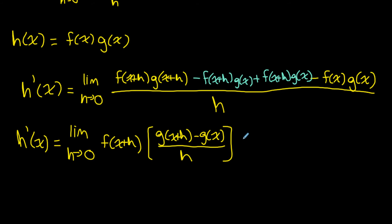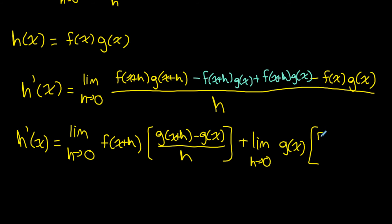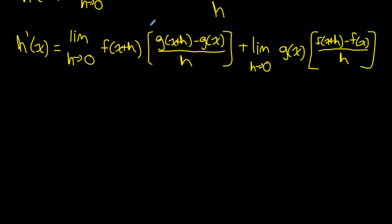Factoring g(x) from the last two terms, I write plus the limit as h goes to zero of g(x) times [f(x+h) minus f(x)] over h. The limit applies to all terms. Now I have two limits: a limit of a product here, plus a limit of a product here.